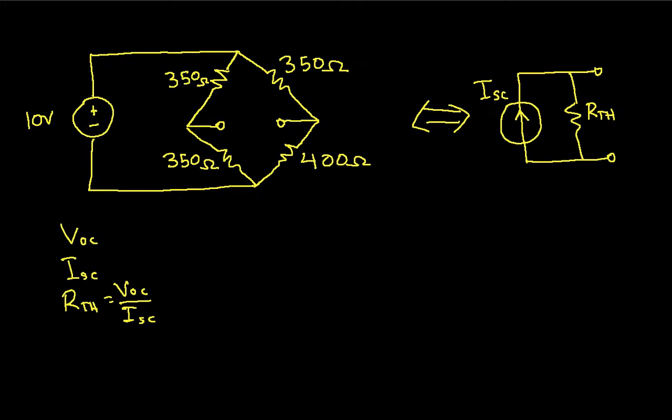So to begin with, we need to find the open circuit voltage. So we are finding the Norton equivalent with respect to these two terminals. So the first thing we need to do is find the open circuit voltage across these two terminals. Well, you'll notice that we have, from here to here, 10 volts. And that with the circuit between the terminals open, I basically have this 350 ohm resistor and this 350 ohm resistor are in series.